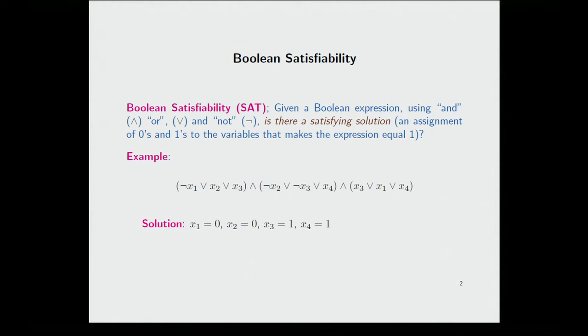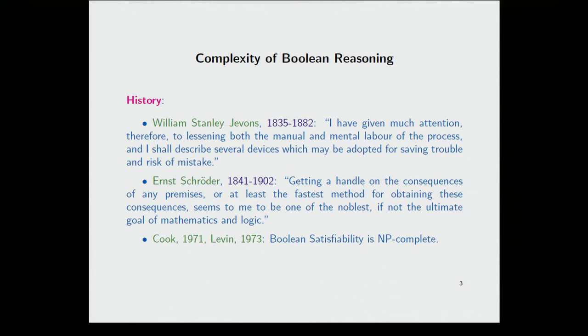Now, people have been thinking about these problems for a long time. So we already find in the 19th century William Stanley Jevons. William Stanley Jevons was a British economist and logician, and he should get credit for what we call Boolean algebra, because Boole did not invent Boolean algebra, but Jevons. Boole used exclusive OR rather than inclusive OR. And he already writes, I've given much attention therefore to lessening both the manual and the mental labor of the process. And by process, he means logical Boolean reasoning. Now, he described several devices which may be adopted for saving trouble and risk of mistake, and he built the first logic machine. He built a machine that can do logical reasoning over four variables. If you're not impressed, try to do it with moving wooden pieces. It's not so trivial.